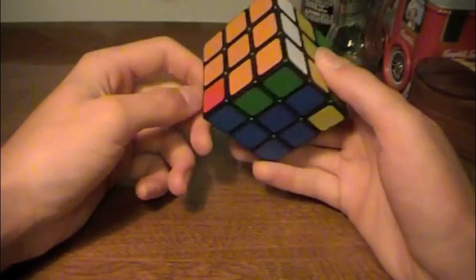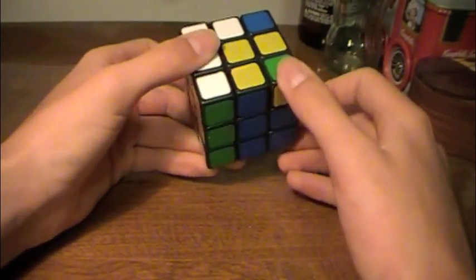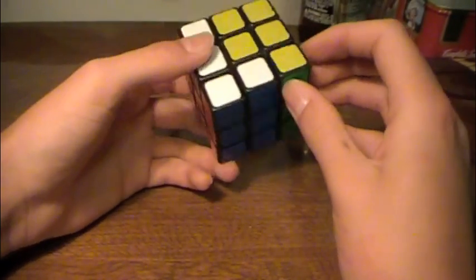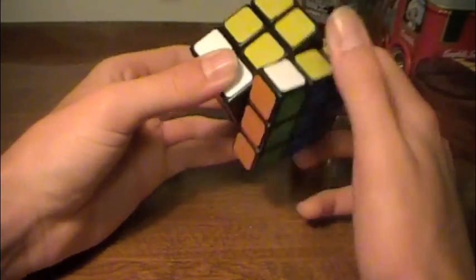And then, you look at this and see that it needs to swap out to match up with the green. And so, you swap it out like that, you move the other piece in, swap it out, undo that move, and then undo the conjugate.